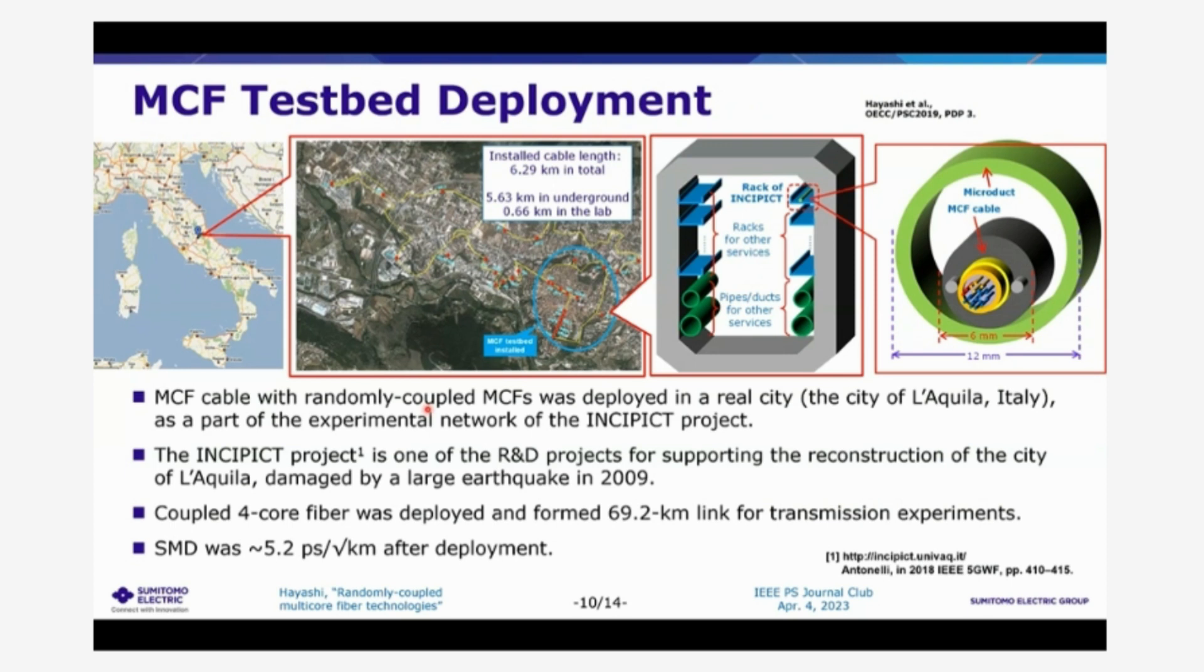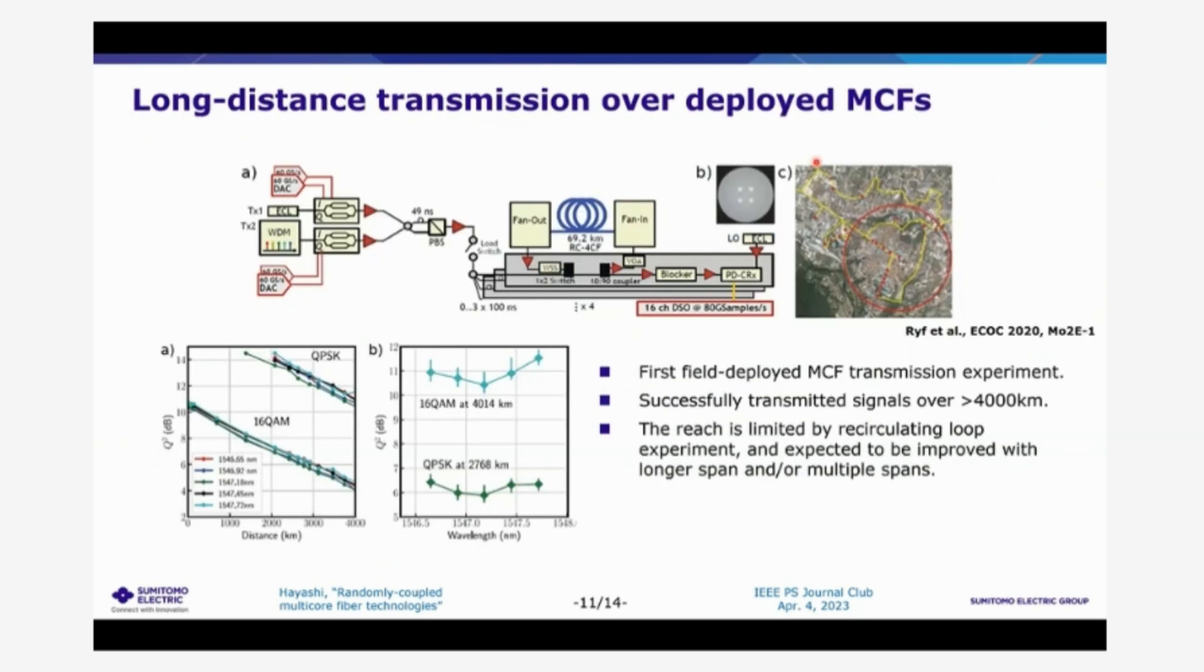Also such a randomly coupled four core fiber was deployed in the field in the city of Italy. And also after the deployment, the mode dispersion was very well suppressed. Also using this transmission deployed testbed, transmission experiment has been conducted and more than 4,000 kilometer transmission was demonstrated.